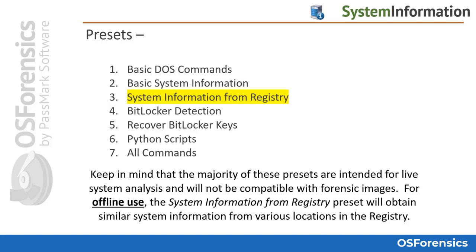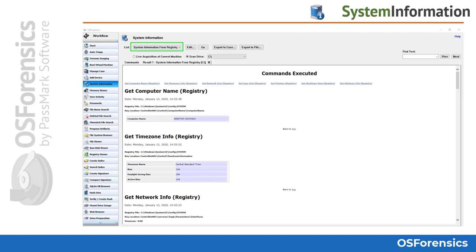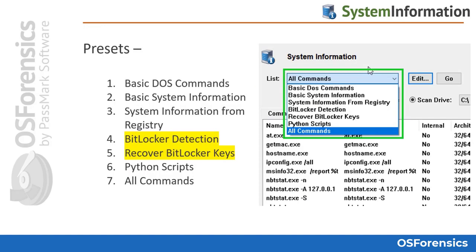The system information from registry preset will obtain similar system information from various locations throughout the registry. Here's a brief look at the scan results: you'll get information like computer name, time zone information, network information, all the user account details — which are very important — connected printers, and more.